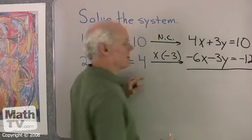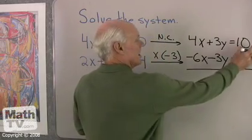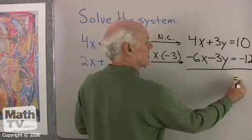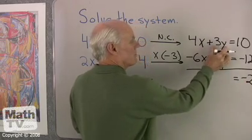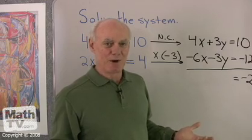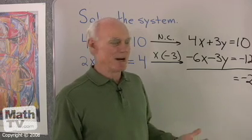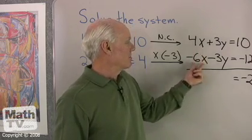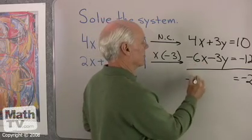Okay, so now I add the two equations together. 10 plus negative 12 is going to be negative 2. 3y plus negative 3y is 0. Of course, it comes out that way because we set it up, so it would come out that way. And then 4x plus negative 6x will be negative 2x.